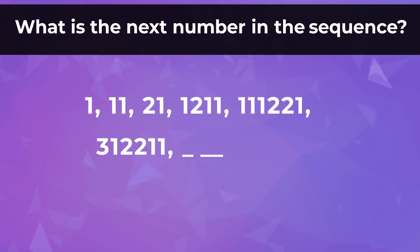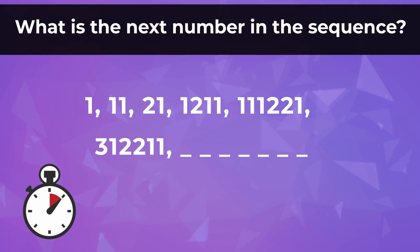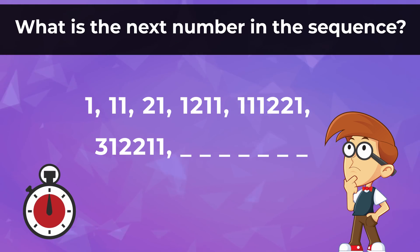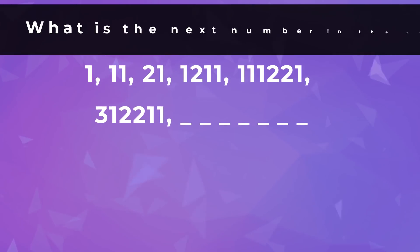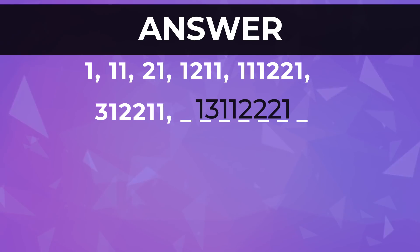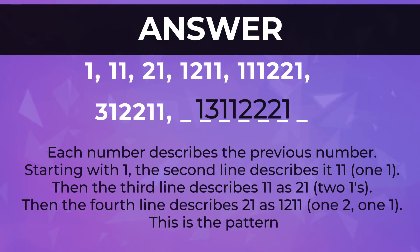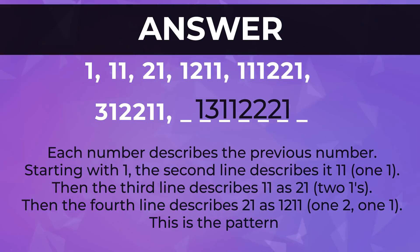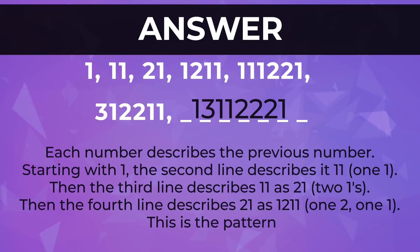What is the next number in this sequence? The numbers in this series are 1, 3, 11, 22, 21. Each number describes the previous number, starting with one-one. The second line describes it as one-one, then the third line describes one-one as two-ones, then the fourth line describes two-one as one-two-one-one. This is the pattern.